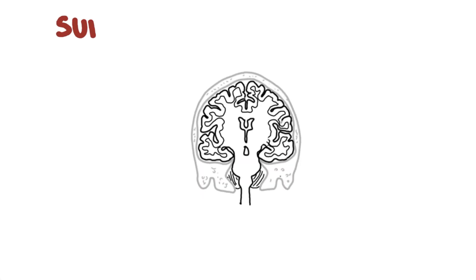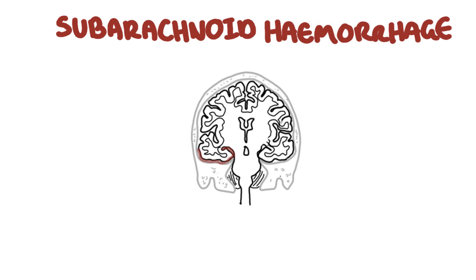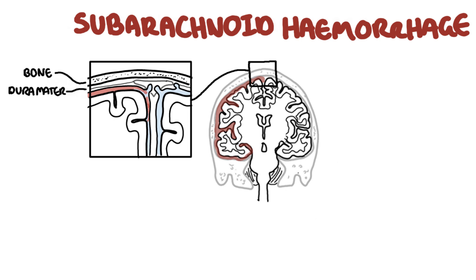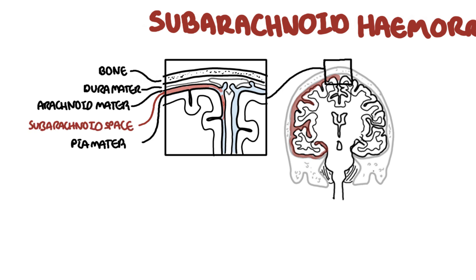A subarachnoid hemorrhage is a type of stroke that causes bleeding around the brain. The bleeding happens in part of the head called the subarachnoid space. This is the area between the arachnoid and pia mater, which is the meninges of the brain, a layer that protects the actual brain. Normally, you have cerebrospinal fluid floating around the subarachnoid space, but with a subarachnoid hemorrhage, you see blood occupying this area.